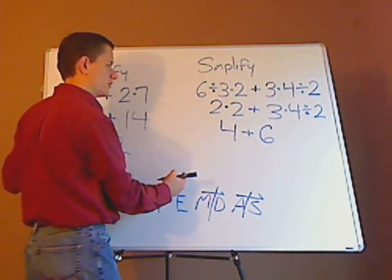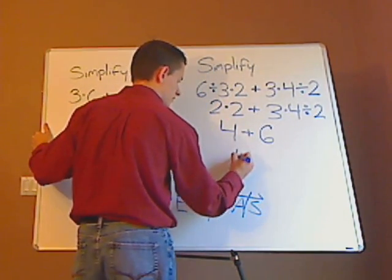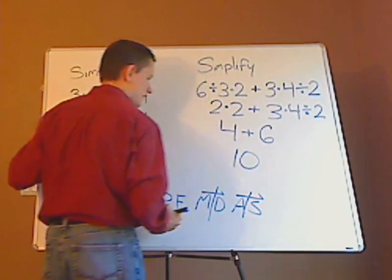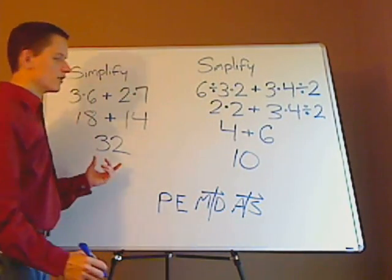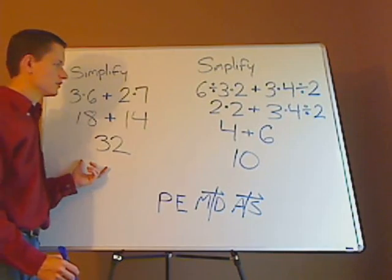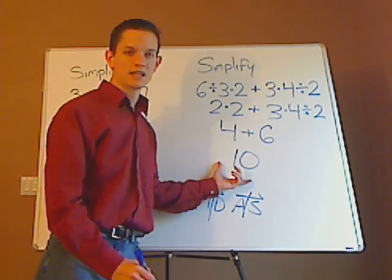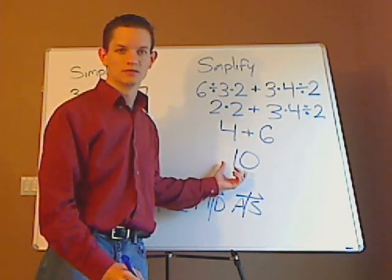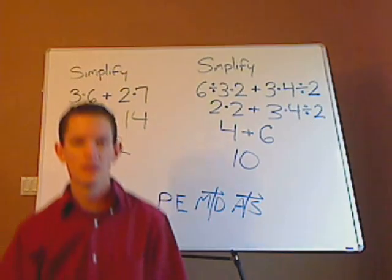And then what's 4 plus 6? Yes, it's just simply 10. So for your first problem, the answer was 32, and for the second expression, you got 10. That's it.